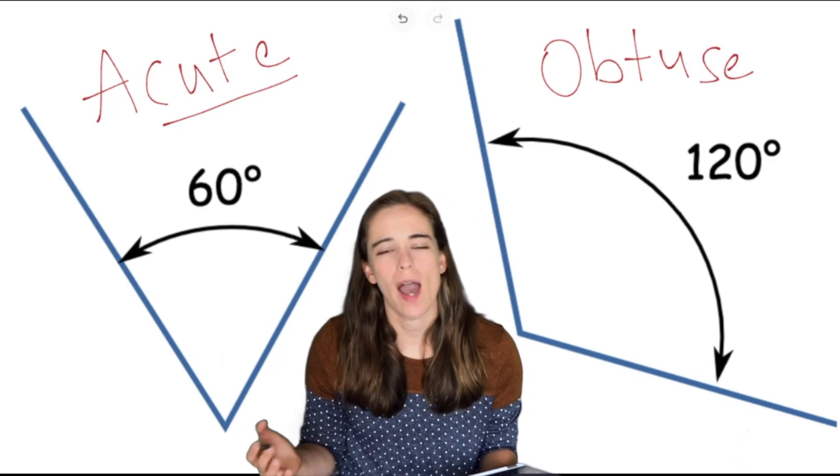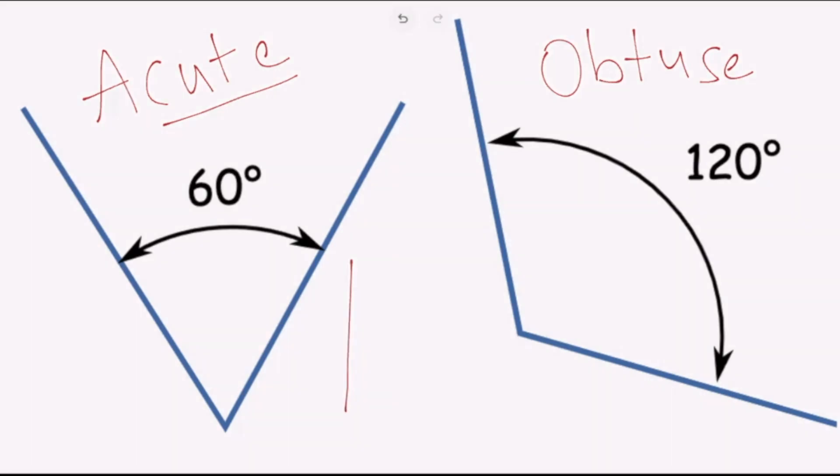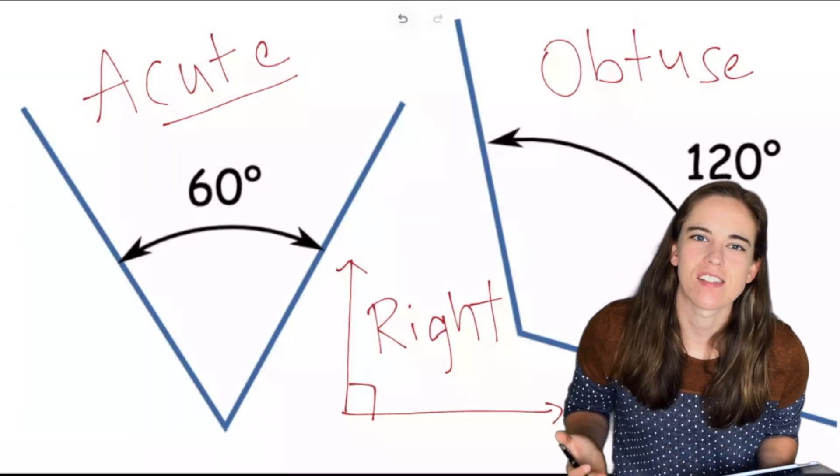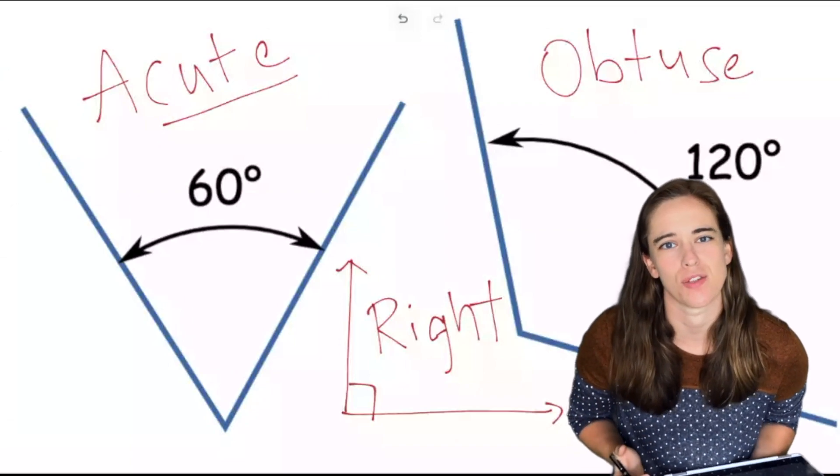So this might make you wonder what happens if my angle is exactly 90 degrees. Well if it's exactly 90 degrees you're going to see it drawn kind of like this. It's probably going to have a little marking in the bottom that usually looks like a square. You might have some arrows on there. This is what we call a right angle when it's exactly 90 degrees. Of course this leads us to the classic joke that if you're cold you should go stand in the corner because it's always 90 degrees.